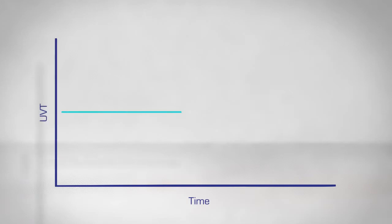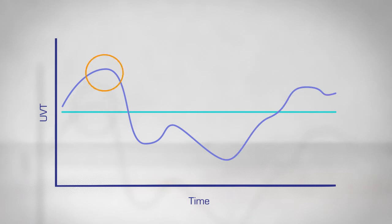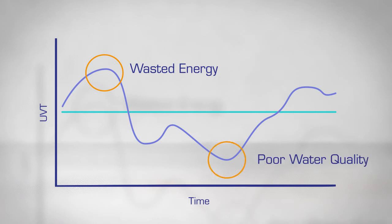Your UV system is designed around the expected UVT of the water, but the actual value fluctuates. If your UVT is higher than expected, you're driving your lamps too hard and wasting energy. If your UVT is lower than expected, treatment may not be effective and your water quality will suffer.